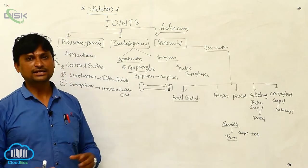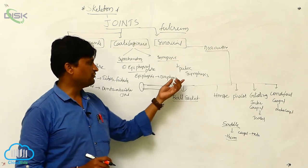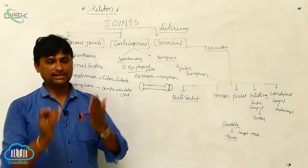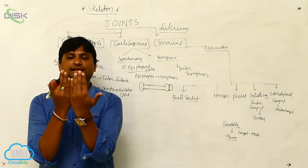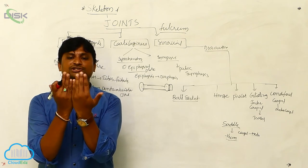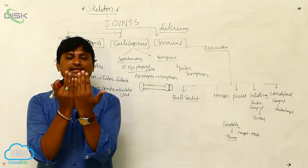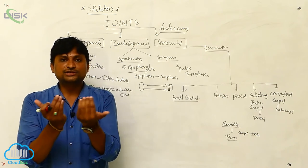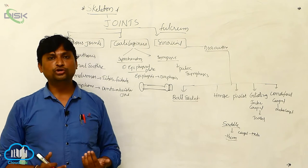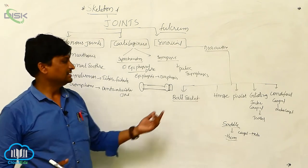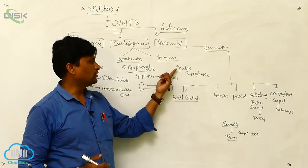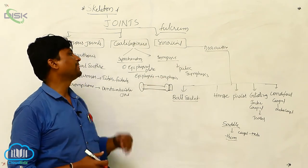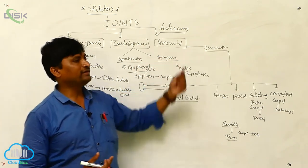Next is symphysis — basically, it consists of a highly thick cartilage joining two bones. We already discussed the pelvic girdle: the two pelvic girdles are attached by cartilage. This highly thick cartilage is called fibrous cartilage, and it attaches the two pubic bones. This type of joint is called the pubic symphysis.